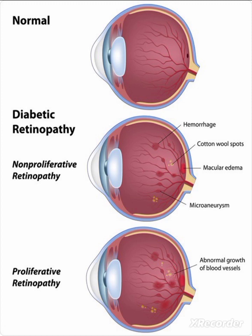In proliferative retinopathy, the main involvement is the retina and vitreous. Retinal capillaries become occluded, leading to a compensatory mechanism — neovascularization — where new blood vessels form to deliver blood to the retina. These new vessels are extremely fragile, causing hemorrhage. If these new blood vessels pull the retina while the vitreous contracts, a tear or partial or complete retinal detachment will occur. If the macula is involved, vision is lost and the patient becomes completely blind.